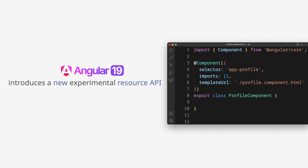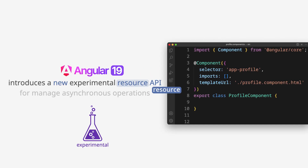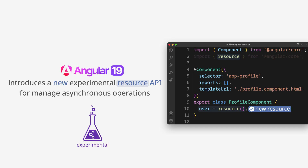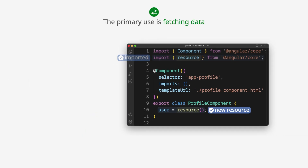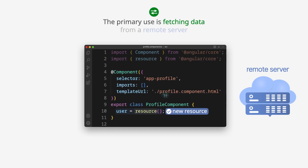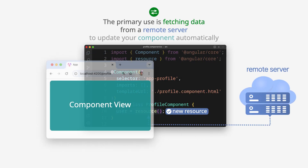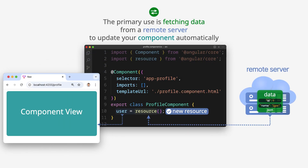Angular 19 introduces a new experimental resource API for managing asynchronous operations. The primary use is fetching data from a remote server to update your component automatically.